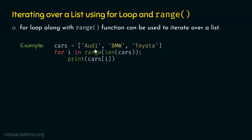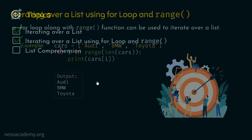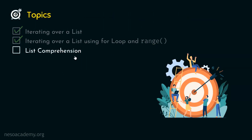Eventually these items will be printed on the screen, so the output of this program is Audi, BMW, and Toyota. I hope this concept is also clear. We can iterate over a list not only with for loop along with the in keyword, but we can also use for loop with range function. Now let's move on to the next topic: list comprehension.